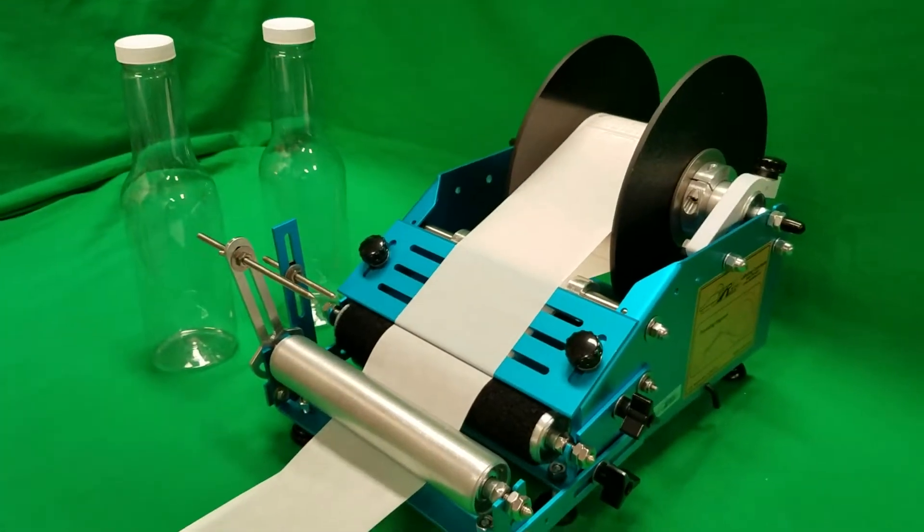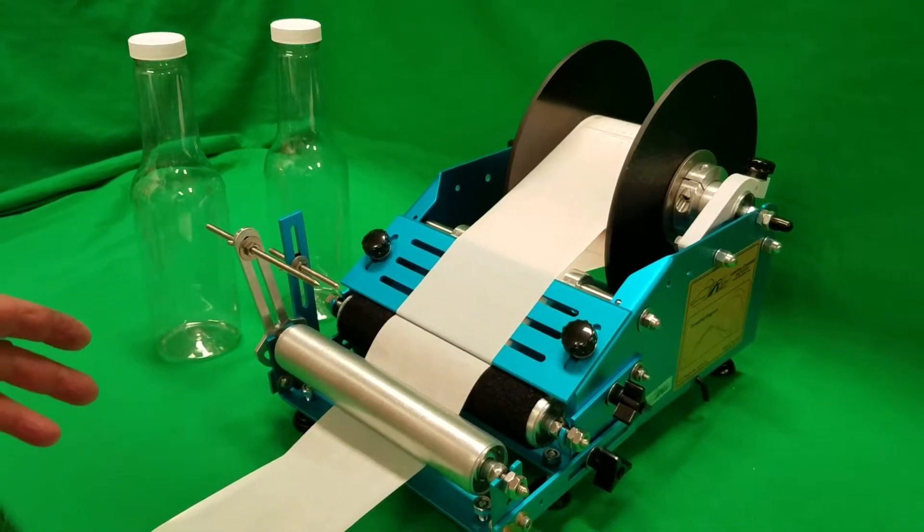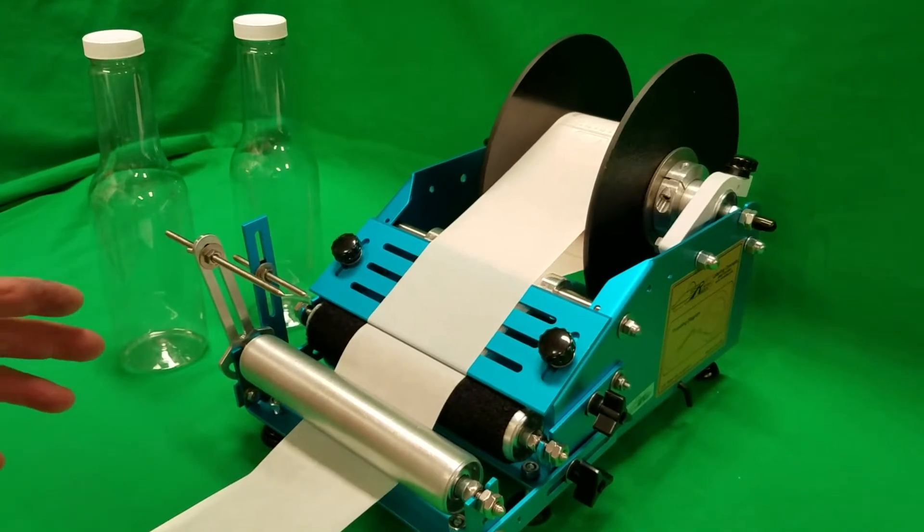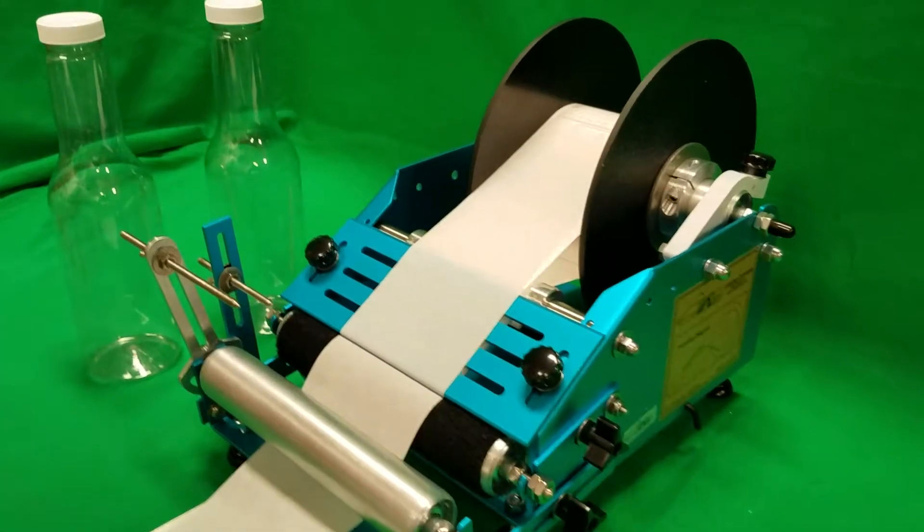This is the Race Jr. Machine. What I'm going to demonstrate is how to do front and back labels that are alternating on the same roll.